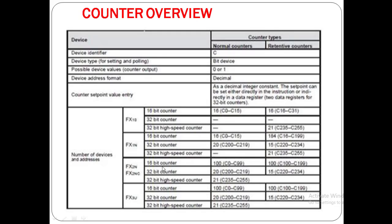In FX2N and FX2NC, 16-bit counters available are 100. Retentive counters are also 100. In 32-bit counters, normal counters are 20 and retentive counters are 15, from C220 to C234. High-speed counters in FX2NC are 21, which are C235 to C255.